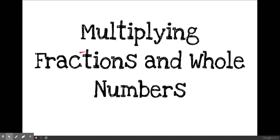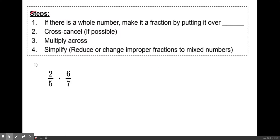In this video, we're going to learn how to multiply fractions and whole numbers. Step 1: if there is a whole number, make it a fraction by putting it over the number 1. So let's look at number 1 over here — there are no whole numbers, so we can skip step 1.